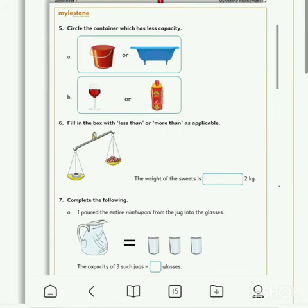Now question number 5. Circle the container which has less capacity. Less means kam. Bucket or bathtub? Tick bucket. Bucket mein kam pani aata hai. Less water, so tick bucket.